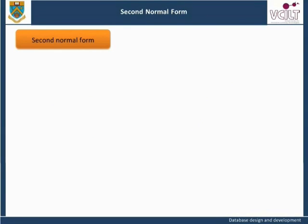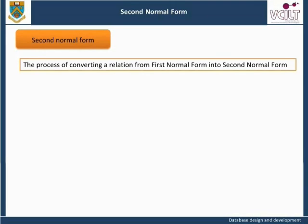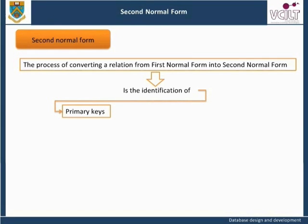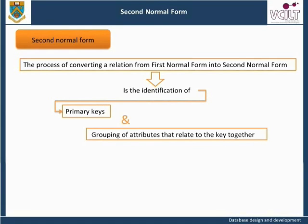Second Normal Form: The process of converting a relation from first normal form into second normal form is the identification of the primary keys and the grouping of attributes that relate to the key together. This means that attributes that depend on different keys will now appear in a separate relation where each attribute depends only on the key, whether directly or indirectly. For a relation to be in second normal form, all attributes must be fully functionally dependent on the primary key.